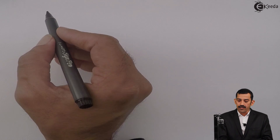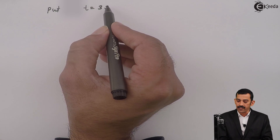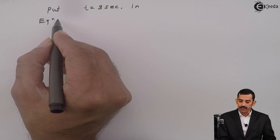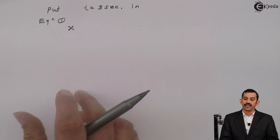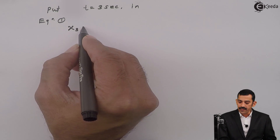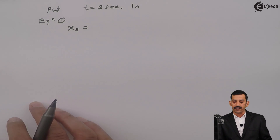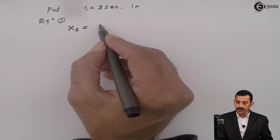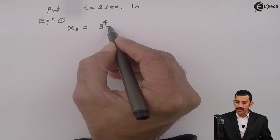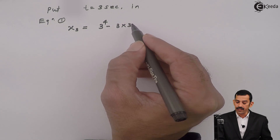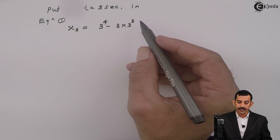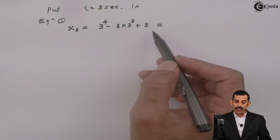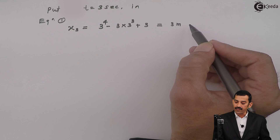Substituting t equal to 3 seconds in equation 1: x at 3 seconds equals 3 raised to 4 minus 3 into 3 cubed plus 3. Using a calculator, this comes out to be 3 meters. This is our first answer — position at t equal to 3 seconds is 3 meters.